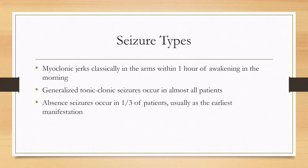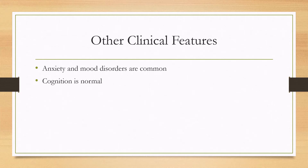There are three main seizure types seen in the disease. The classic one is the myoclonic jerk that normally happens in the arms, occurring upon awakening in the early morning or up to one hour from awakening. Generalized tonic-clonic seizures happen in almost all patients. In about a third of patients, the first seizure type that appears is the absence seizure, although not all patients will have this. Anxiety and mood disorders are fairly common, and cognition is typically normal.